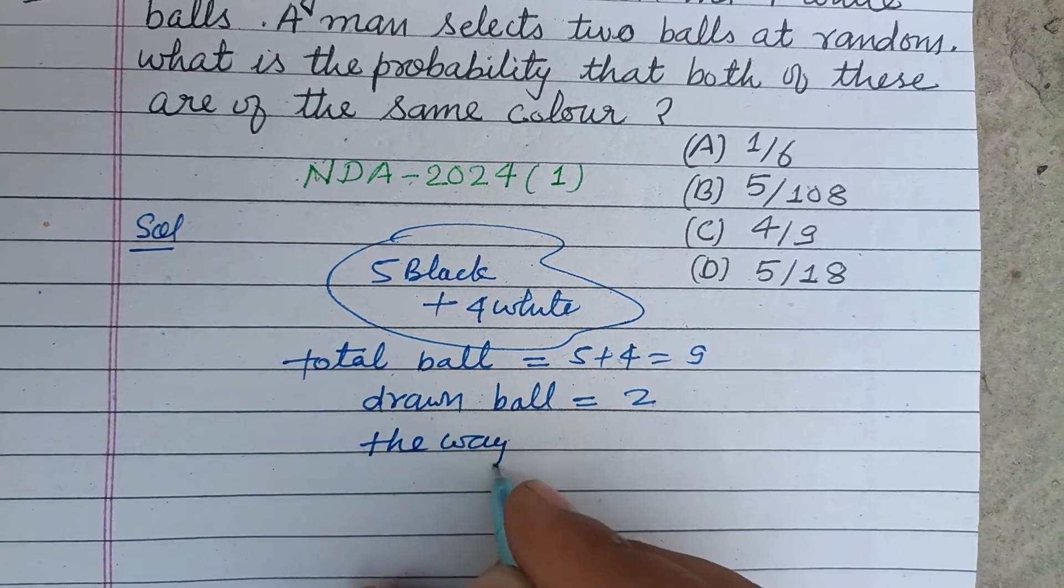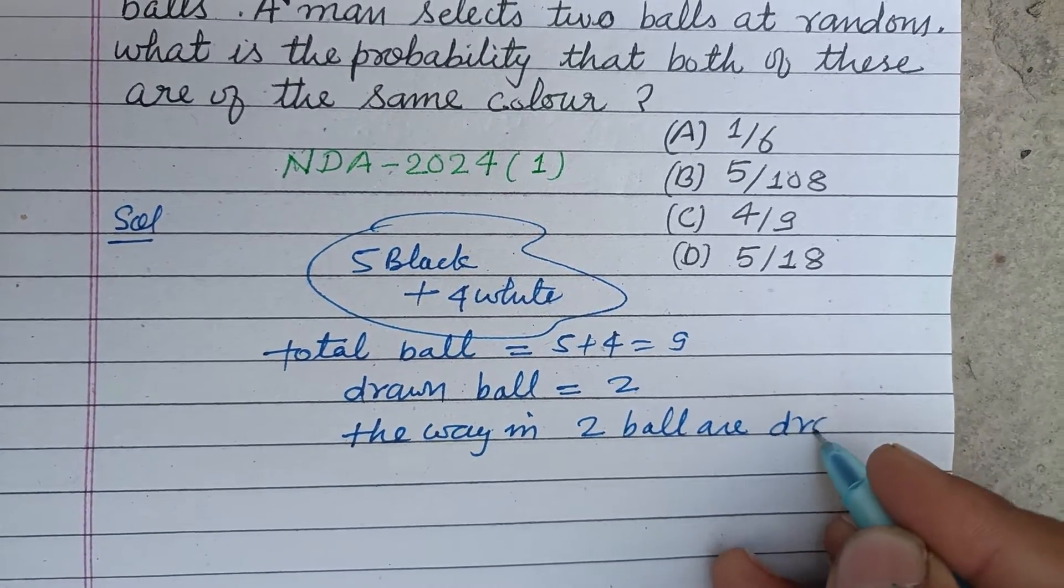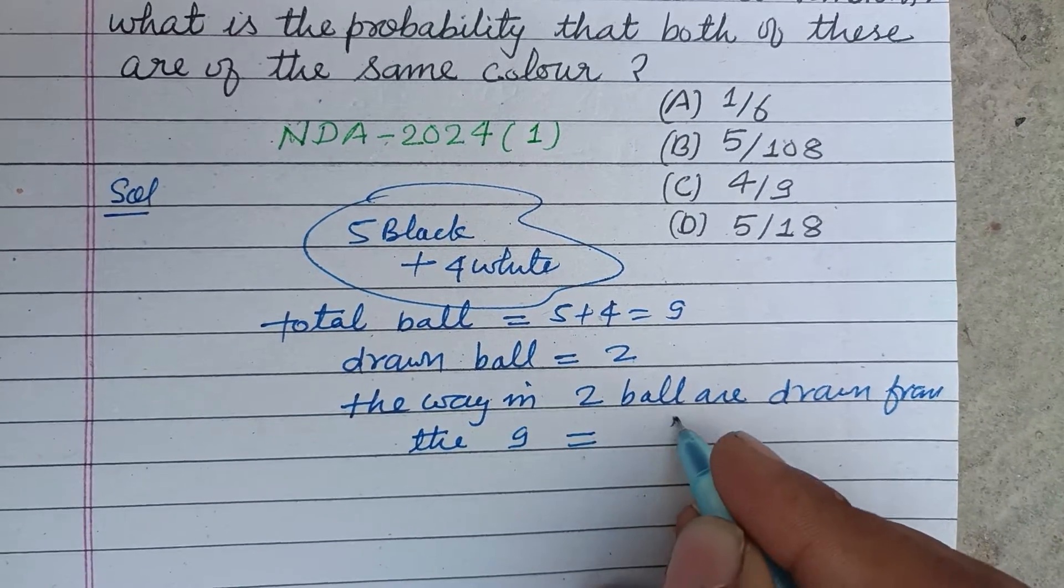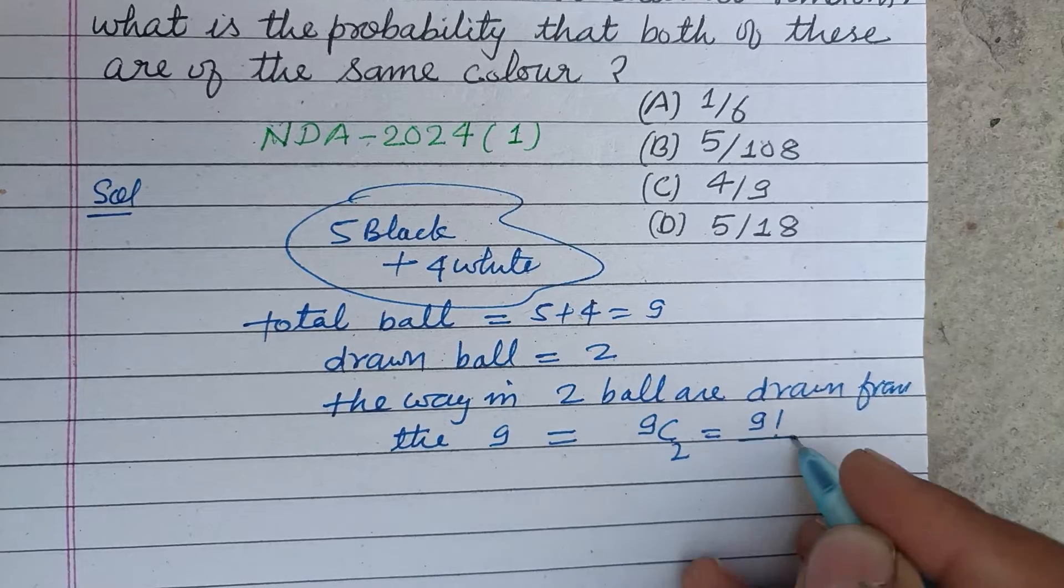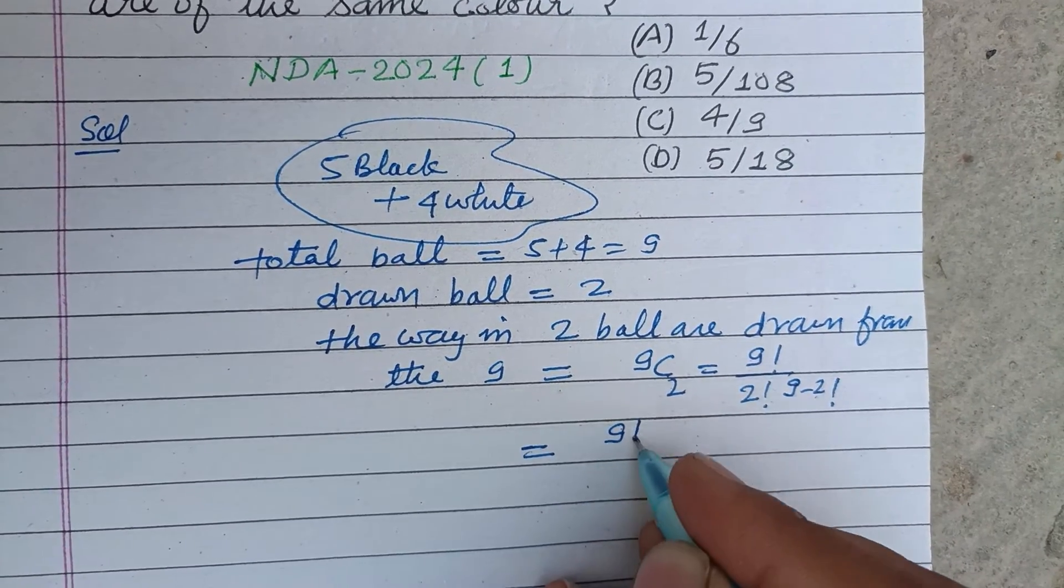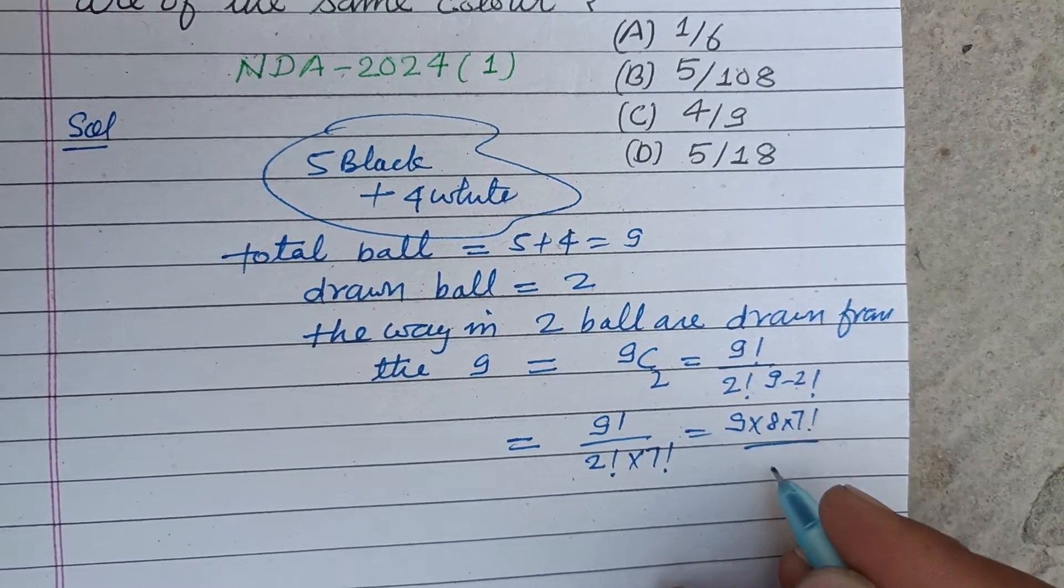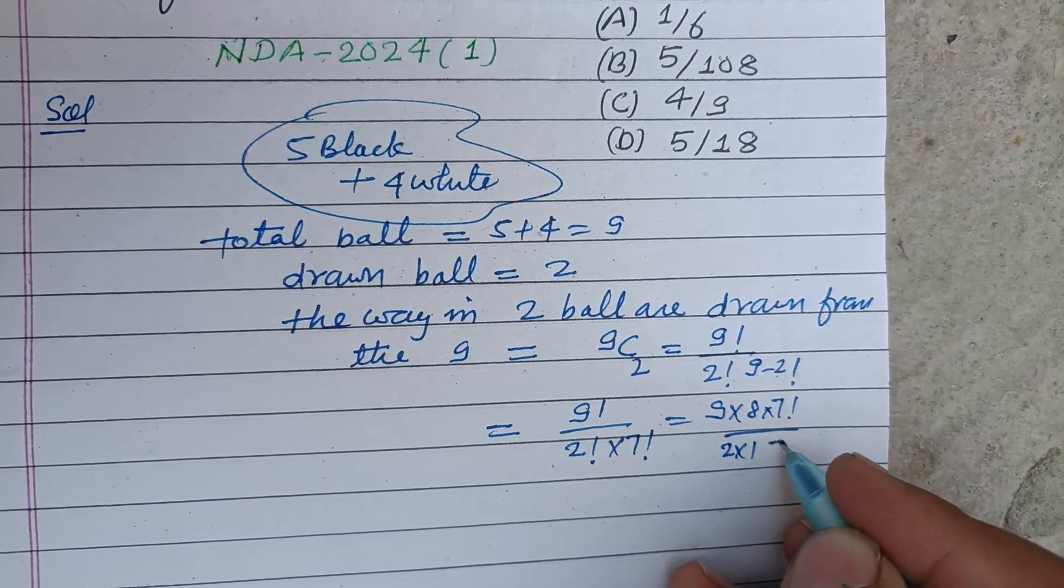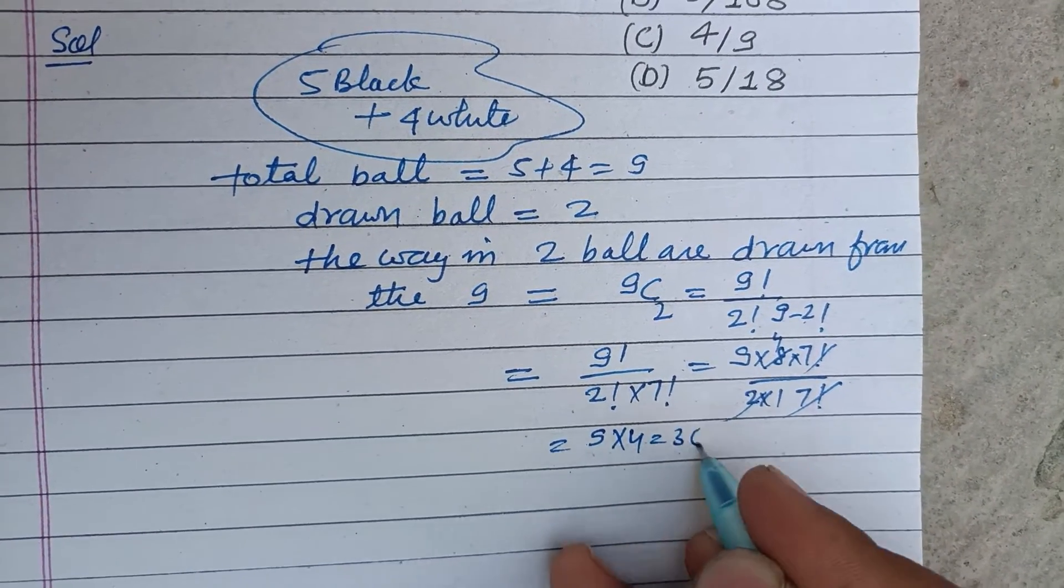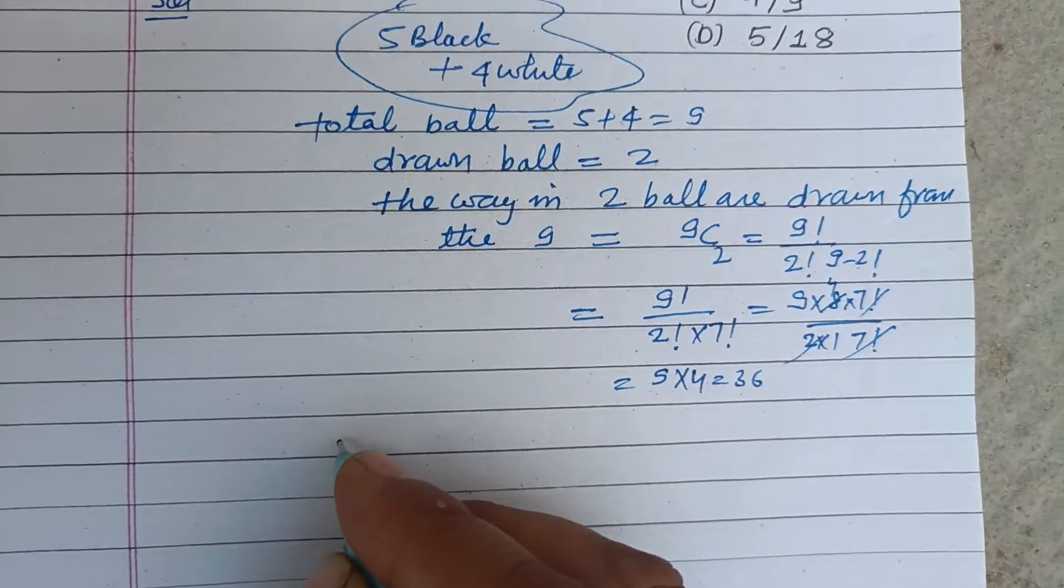The way in which two balls are drawn from the nine equals 9C2. So this is factorial nine upon factorial two into nine minus two factorial. This is factorial nine over factorial two into factorial seven. So this is nine into eight into factorial seven over two into one into factorial seven. Factorial seven cancels, two into four is eight, so nine into four that is 36. Now these two balls can be black or white.